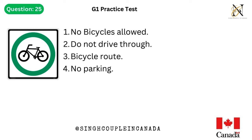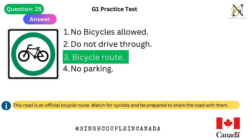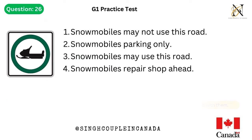Question 25. This traffic sign means: 1. No bicycles allowed. 2. Do not drive through. 3. Bicycle route. 4. No parking. Answer is 3. Bicycle route — this road is an official bicycle route. Watch for cyclists and be prepared to share the road with them.